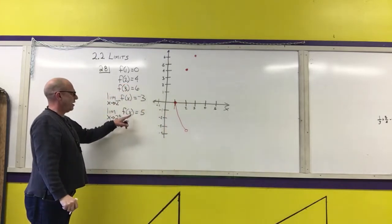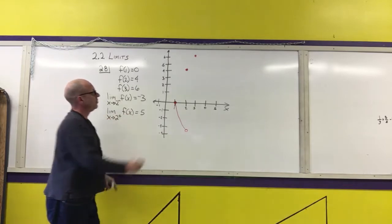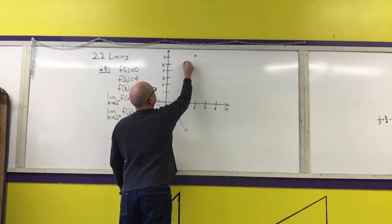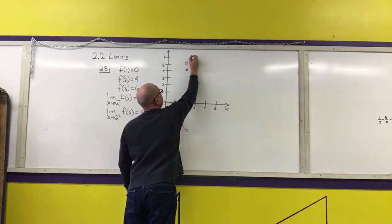Then it says the limit as x approaches 2 from the right needs to be 5. So approaching 2 from the right needs to be 5, and from the right is this direction, so I'm going to connect the point this way.